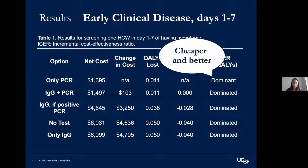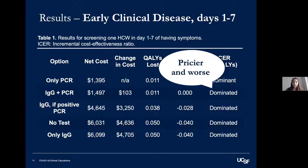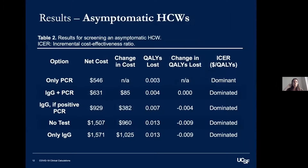Screening healthcare workers 8 to 14 days post-symptom onset and asymptomatic healthcare workers gave very similar results. For asymptomatic healthcare workers, the QALYs at stake are much lower, but the outcome is the same — PCR testing dominates. Multivariate sensitivity analyses showed this outcome remained true no matter how we varied our input variables.